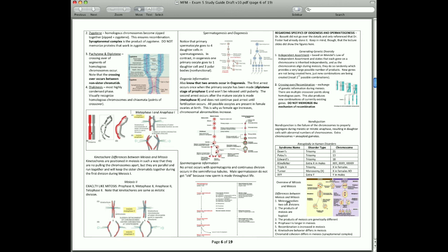So let's just go over this real quick, the differences. Meiosis involves two cell divisions. The product is haploid, and they're genetically different because of recombination. Prophase 1 is much longer, and kinetochore behavior is different. Thank you.